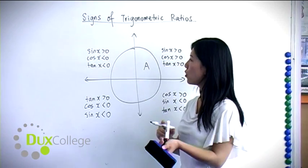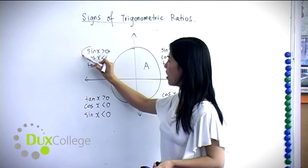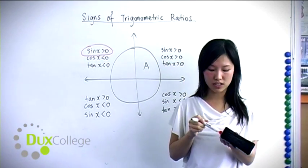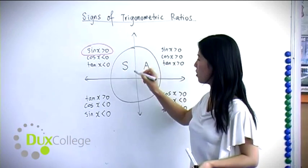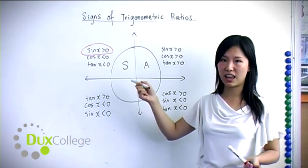In the second quadrant, only the sine ratio is positive, so that's why we symbolize this by labeling as the letter S.